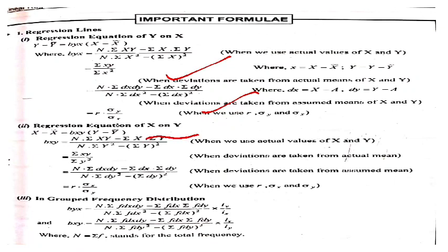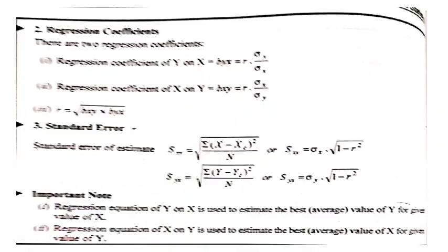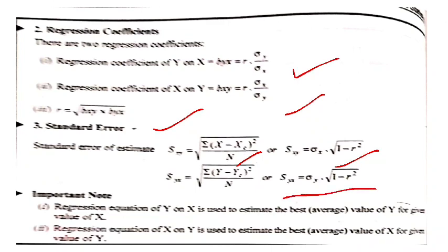Equation of x on y: x − x̄ = bxy(y − ȳ). bxy = r × (σx / σy). r kaise calculate hota hai — dono regression coefficients ka geometric mean: r = √(bxy × byx). Standard error of estimate: for x on y — Sx = σx × √(1 − r²). For y on x — Sy = σy × √(1 − r²).